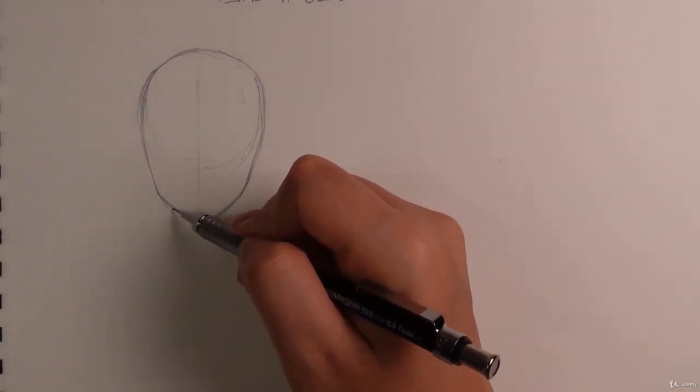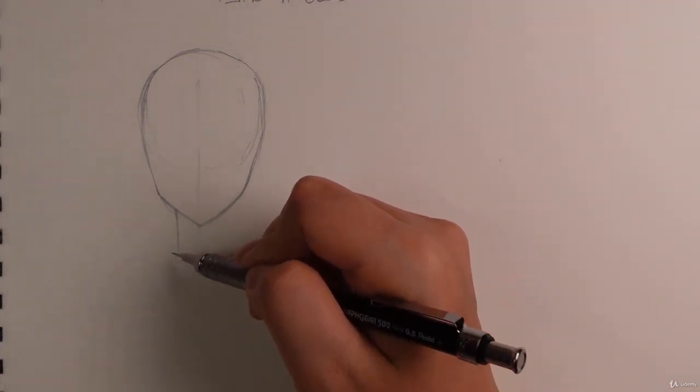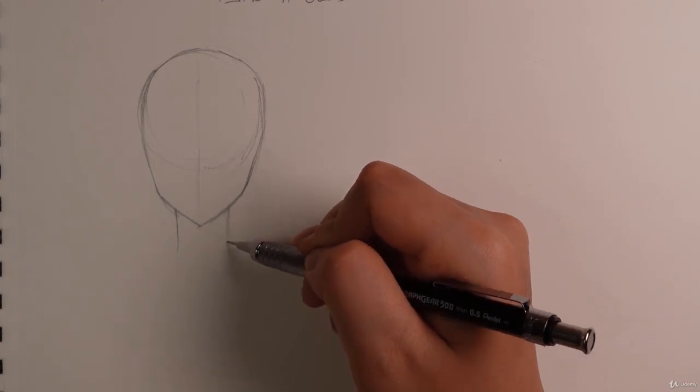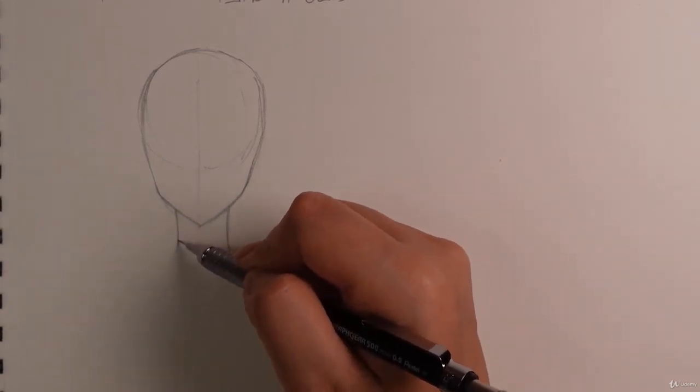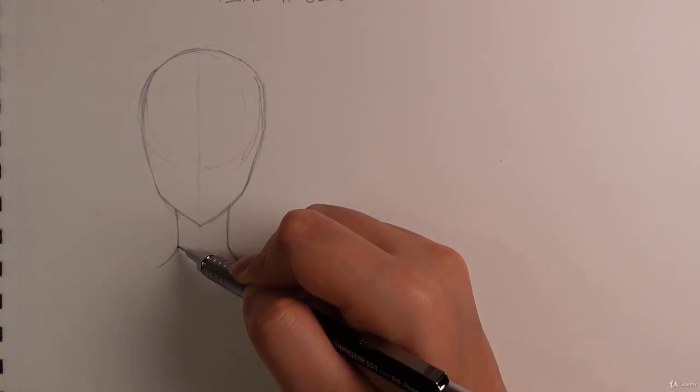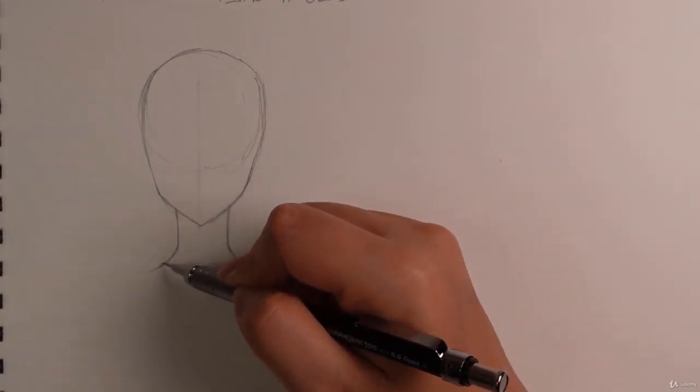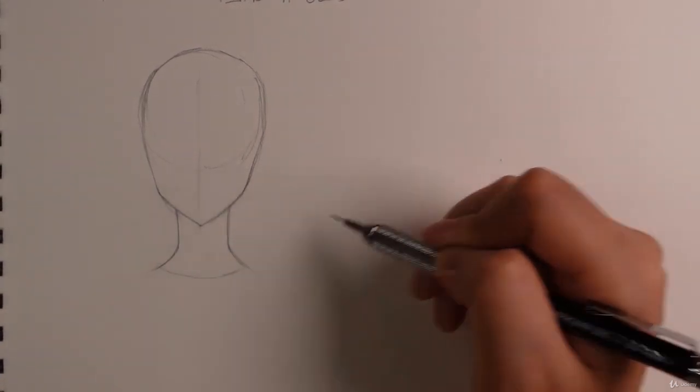So here we have our neck which is a lot thinner. So make it thin but not like a penciled neck, just make sure it can support her head. And we can draw the curves of a trapezius.